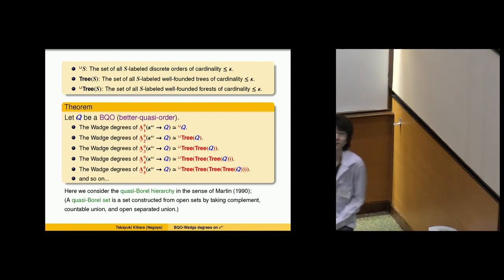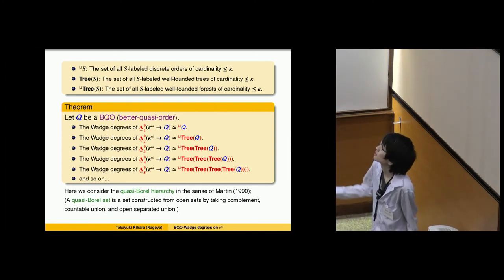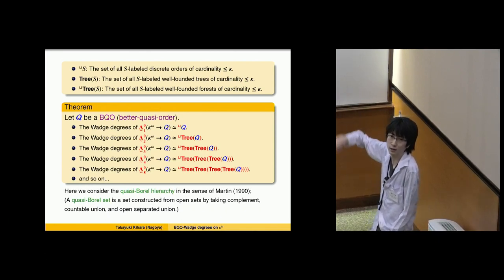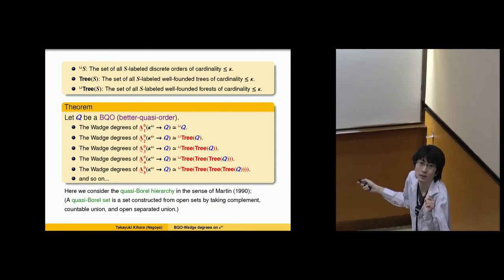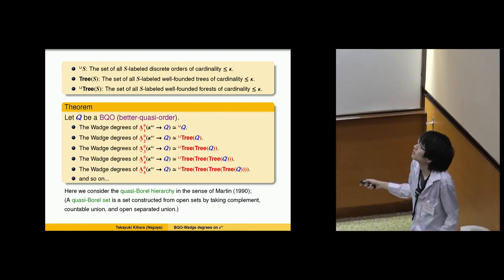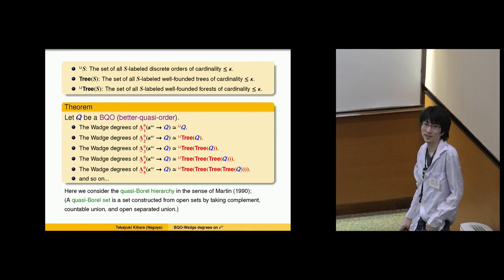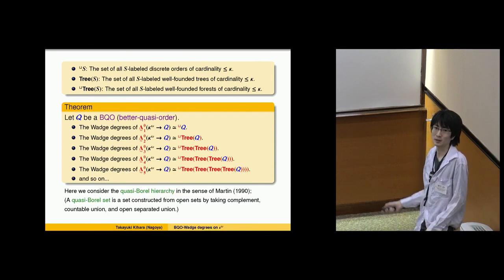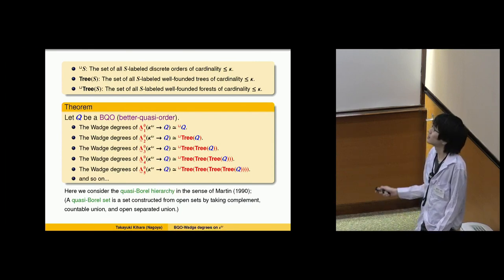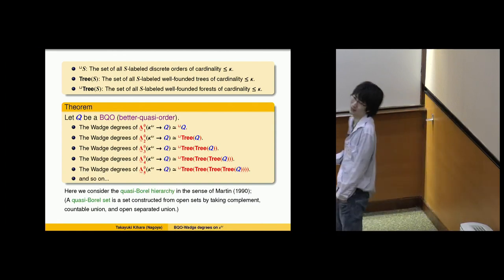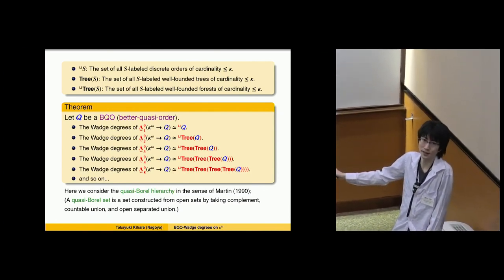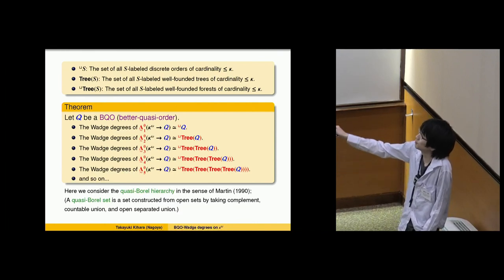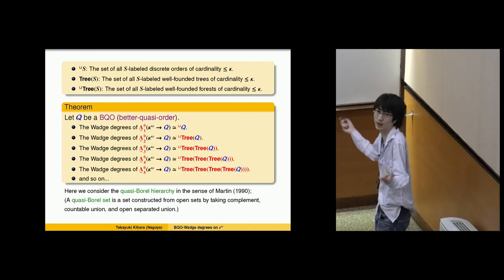During Q&A, a question is asked about the rank of quasi-Borel sets. The speaker notes that in kappa-omega, the open-separated union may involve a union of kappa-many sets, so the rank of the quasi-order sets may be at least for countable ordinals.